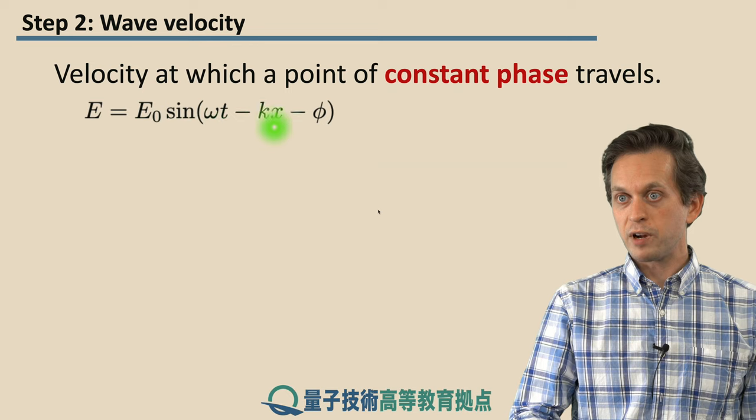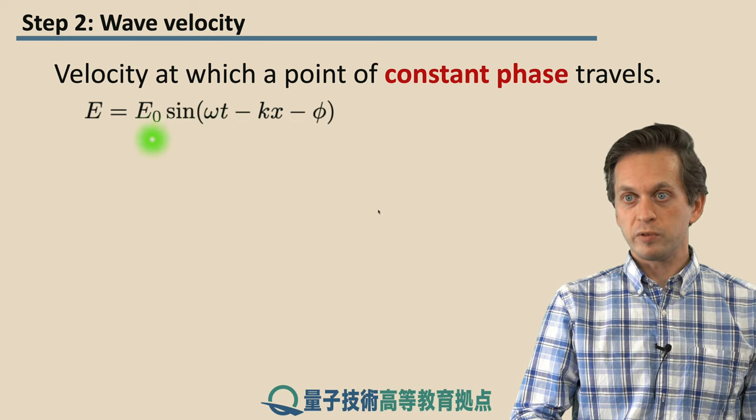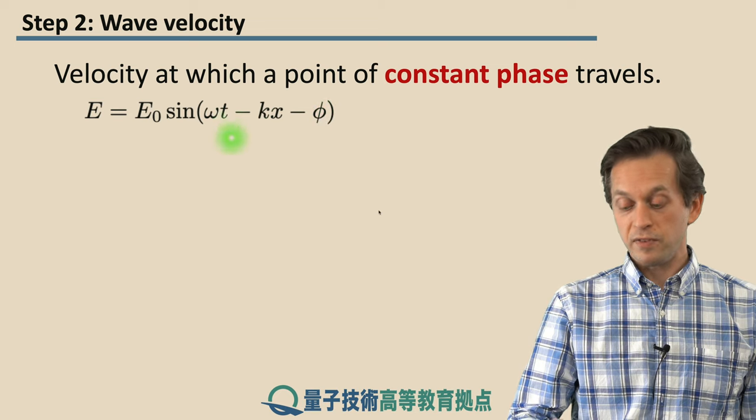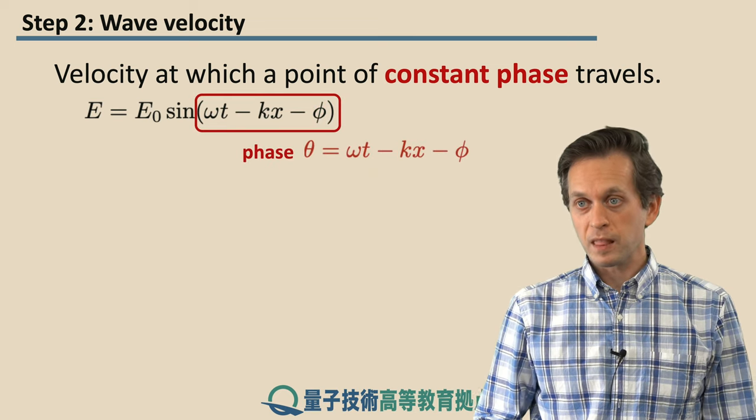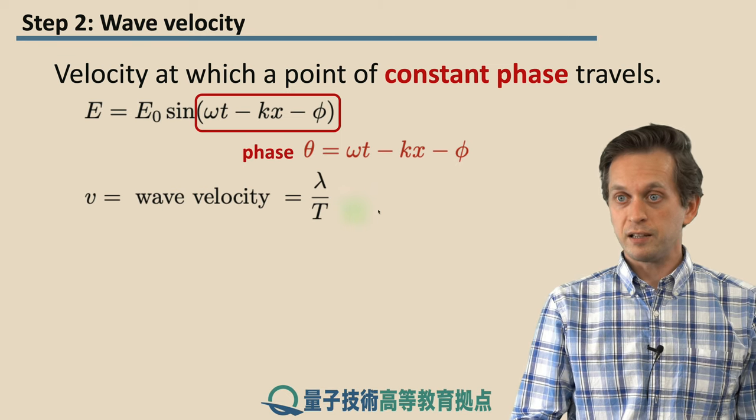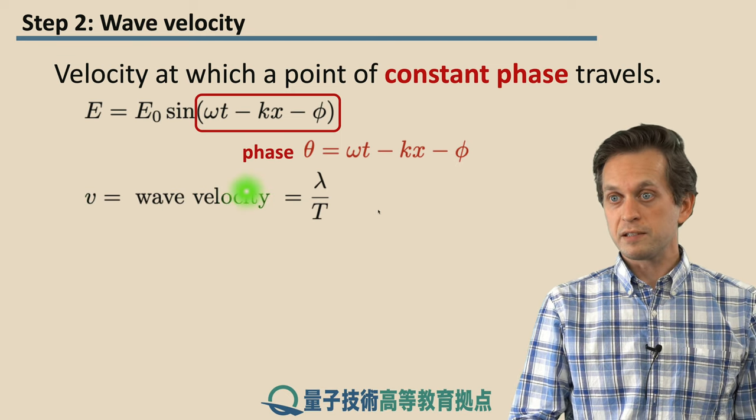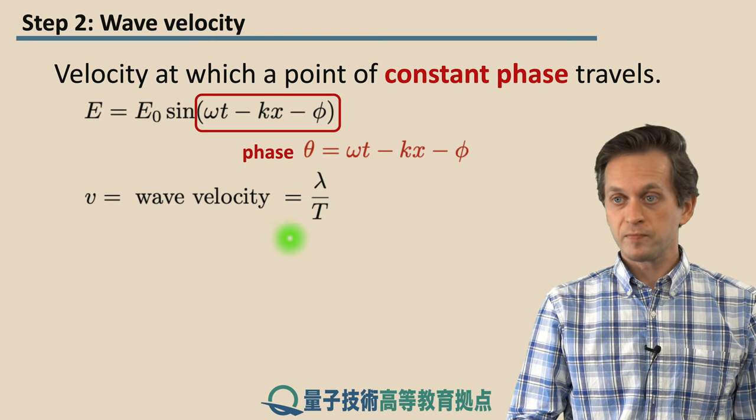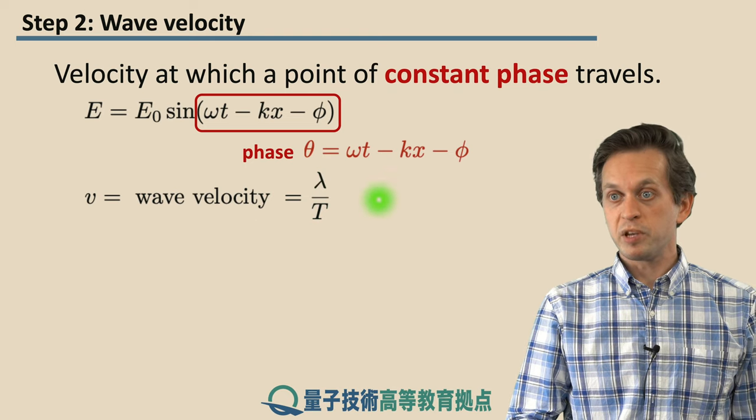We saw in the previous step that we can write down such a wave in this form. We've got the amplitude times sine of its phase. And maybe you remember from previous studies that wave velocity is given as the ratio of the wavelength lambda and its period, capital T.